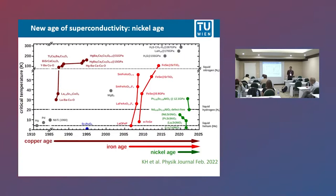Three years ago, we entered a new age of superconductivity with enormous experimental and theoretical activity. So after the copper age and the iron age, we are now in the nickel age, and as you see here, the TC has started to increase. It will increase further — I'm sure — though whether it will ever surpass the cuprate TC is questionable.